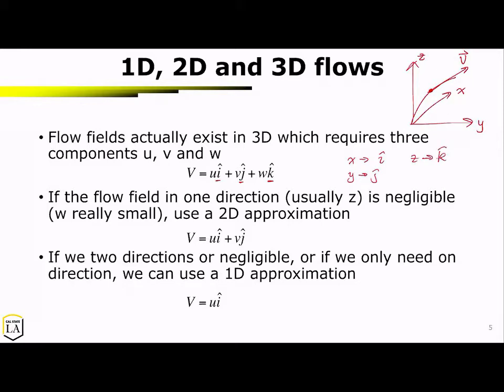The velocity vector is broken into components U, V, and W, where U describes movement in the X direction, V describes the velocity component in the Y direction, and W describes the velocity component in the Z direction. You don't necessarily have flow in three dimensions — you might have flow going up and down, left and right in two dimensions, or just flow going left or right in one dimension. You have to decide how that fluid particle is moving and then break it into its U, V, and W components.